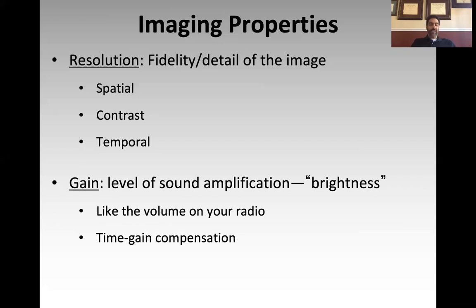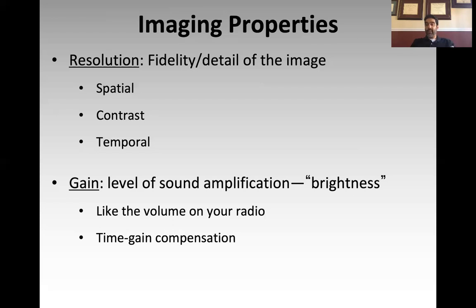This concept of time gain compensation is just a fancy way of saying that you have the ability on machines to adjust the gain on different fields of your screen. On the Sonosite machines that we use, we have two fields — a near field and a far field — that you can individually adjust the gain settings on. The near field is the top half of the screen, the far field is the bottom half. There's also a total gain knob where you can adjust the gain on the whole screen at the same time. We'll go over that when we actually play with the machine.